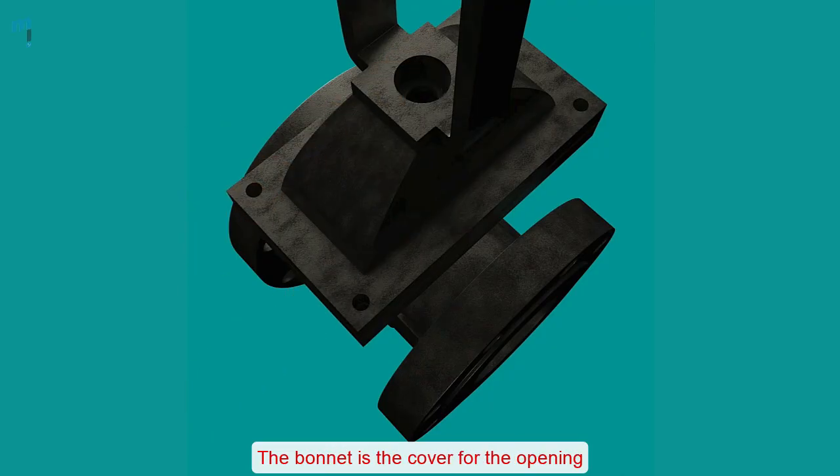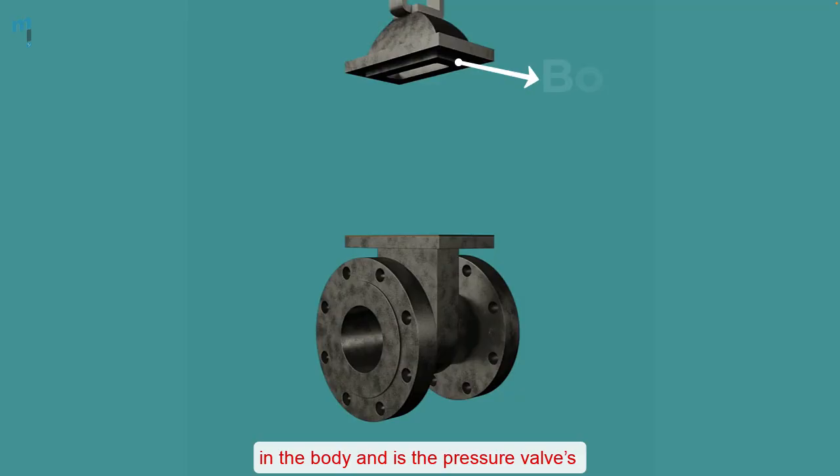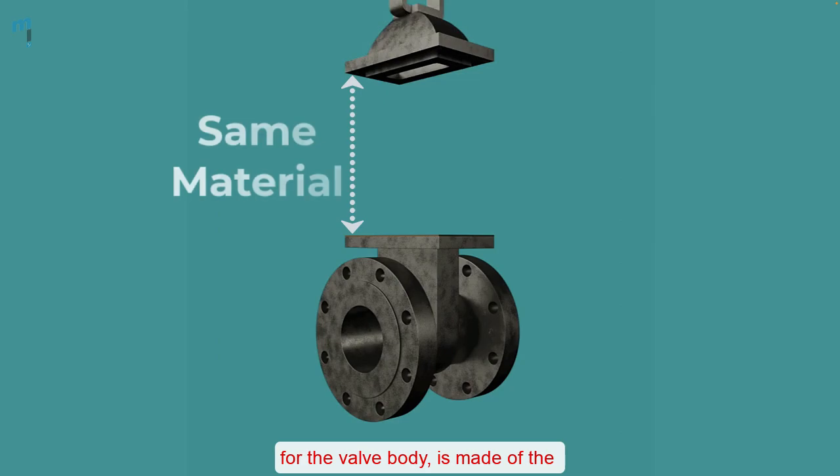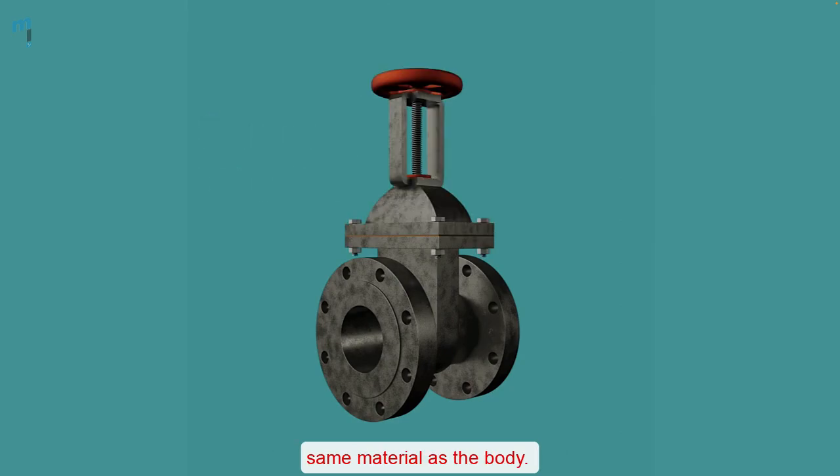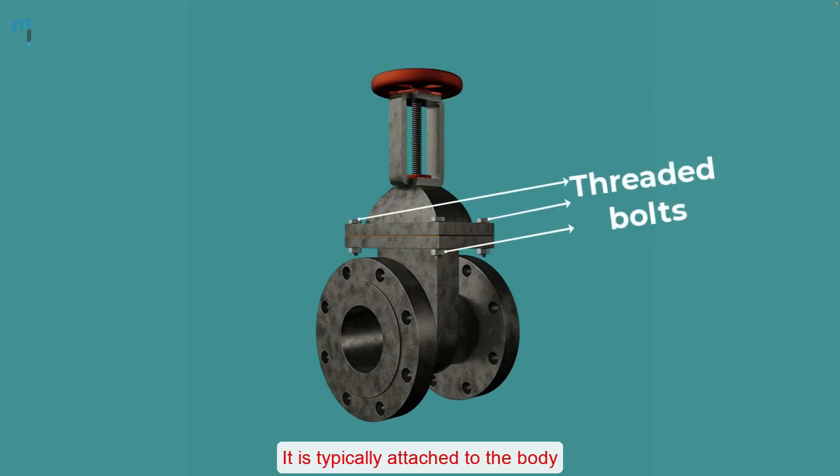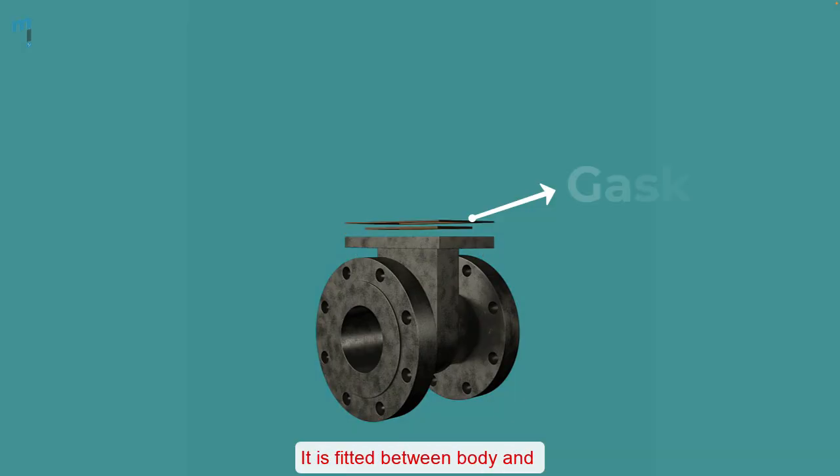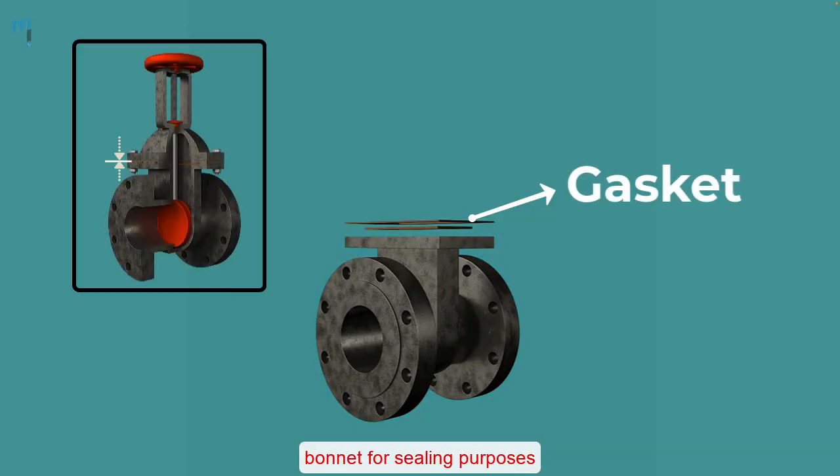Bonnet: The bonnet is the cover for the opening in the body and is the valve's second most important pressure boundary. A bonnet which serves as the cover for the valve body is made of the same material as the body. It is typically attached to the body via threaded bolts. Gasket: It is fitted between body and bonnet for sealing purposes.